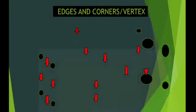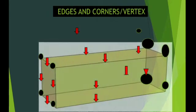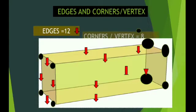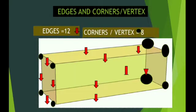Now what are edges and corners? Another word for corners is vertex. Now children, the red arrows can you see? The red arrows marked on the lines are the edges, whereas the black dots at the corners are the vertex or corners.